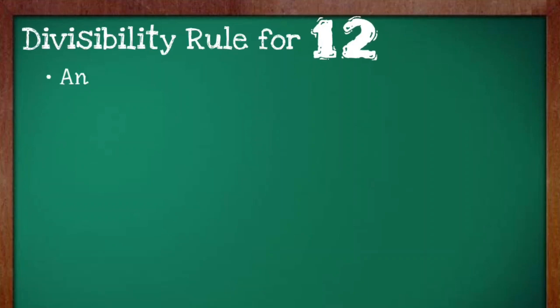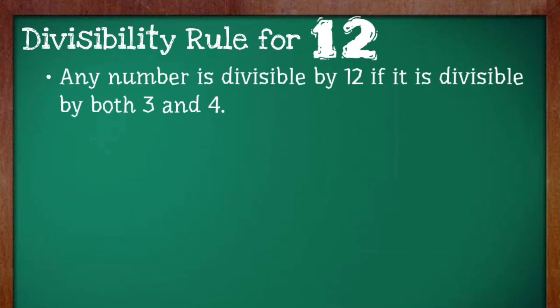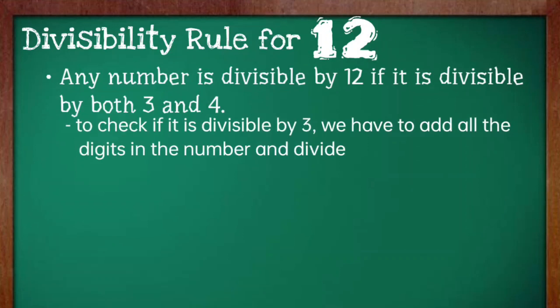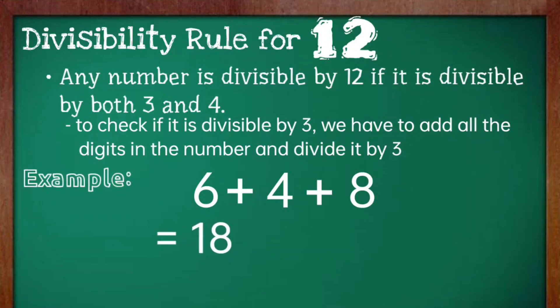And now, divisibility rule for 12. Any number is divisible by 12 if it is divisible by 3 and 4. To check if it is divisible by 3, we have to add all the digits in the number and divide it by 3. For example, 648. The number 648 is divisible by 3 since 6 plus 4 plus 8 is equal to 18 divided by 3 which is equal to 6.